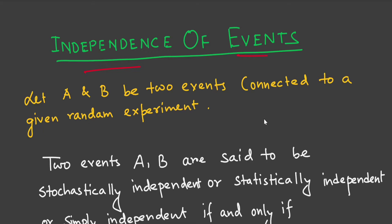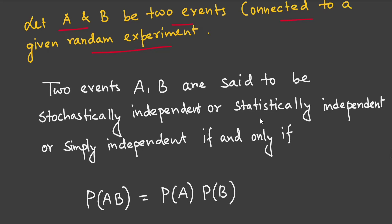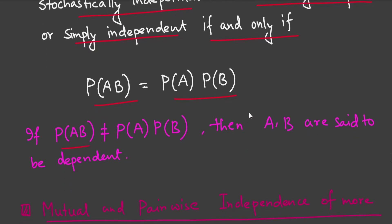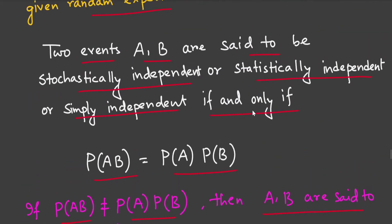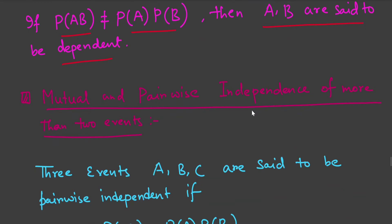Let A and B be two events connected to a given random experiment. Two events A and B are said to be stochastically independent, statistically independent, or simply independent if and only if P(AB) = P(A)·P(B). If P(AB) is not equal to P(A)·P(B), then A and B are said to be dependent events.